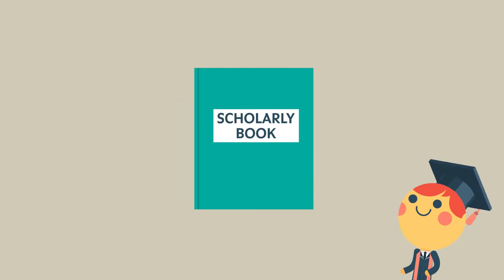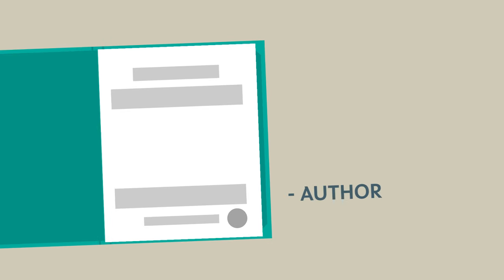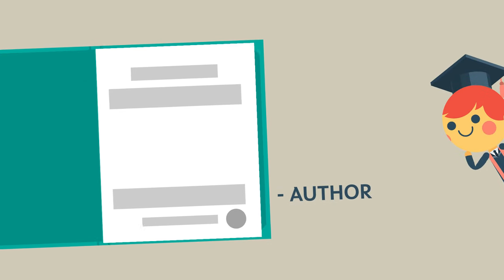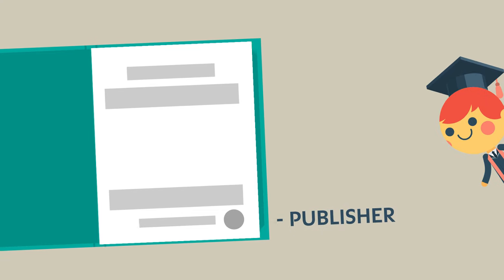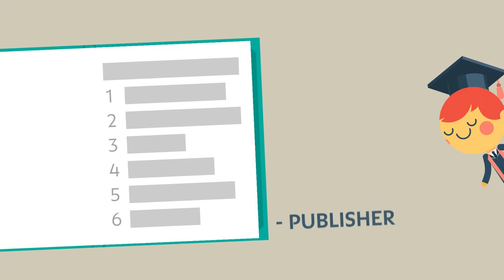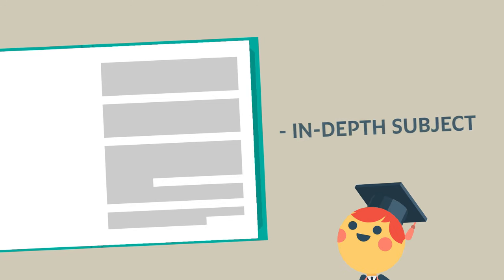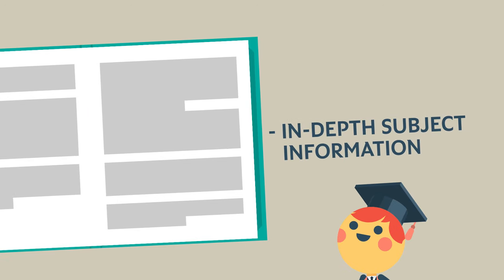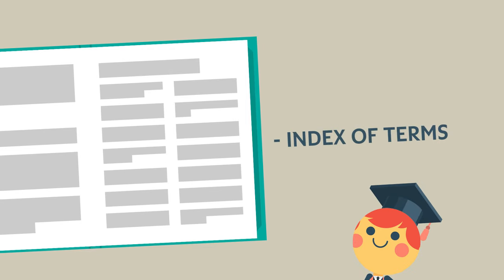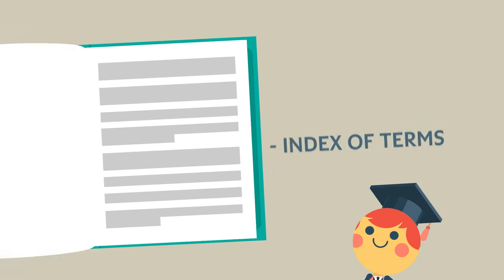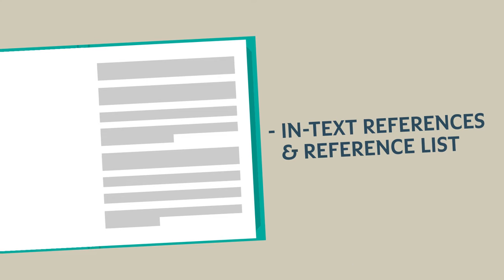Books can also be scholarly. A scholarly book is written by experts within the field, is published by a reputable, well-known publisher, has a table of contents, provides in-depth information on a topic or subject area, includes an index to look at terms, as well as in-text references and a reference list.